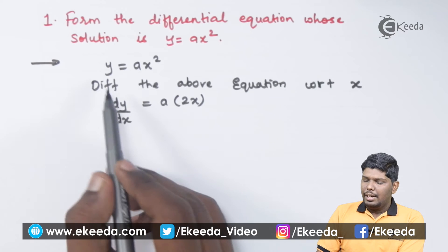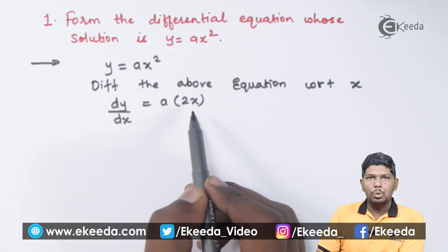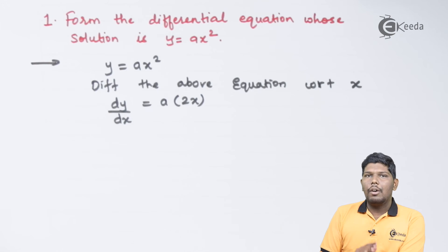We have the derivative of y, dy/dx, is equal to a into the derivative of x², which is 2x. Now as you can see, our arbitrary constant is not eliminated, so therefore we can find the value of a from this equation.